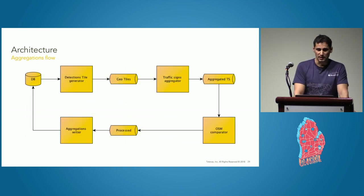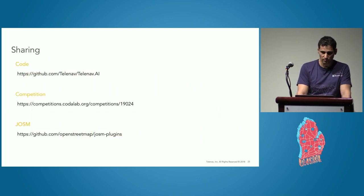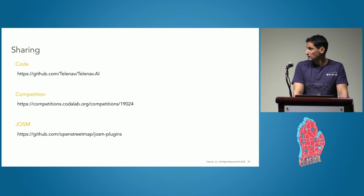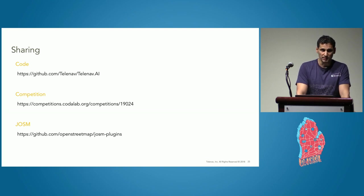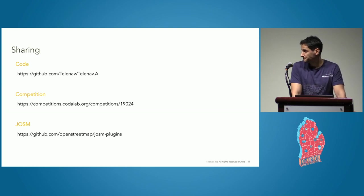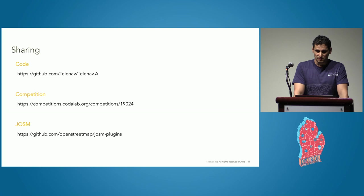The second architecture slide presents the flow we are using for aggregating detection. We are calculating those aggregations on geotiles. Also, we have shared part of our detection code to the community on GitHub being freely available. And we also have been running a competition for better traffic signs, links on the slide. JOSM is also public. Soon we will release a new version containing all visualizations included in my presentation.